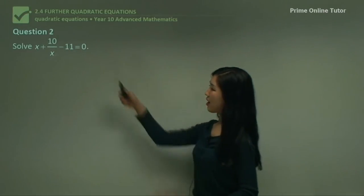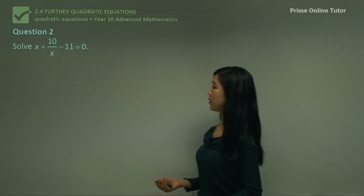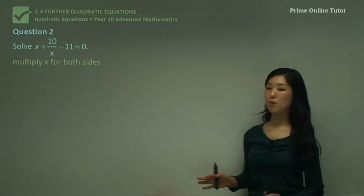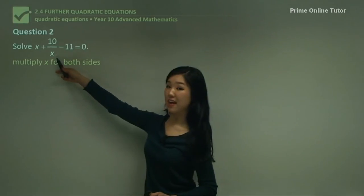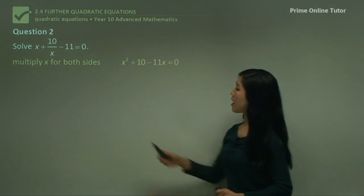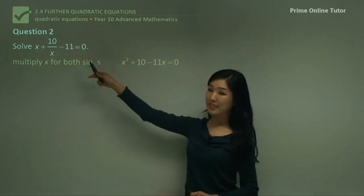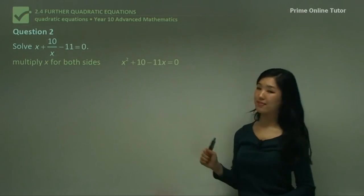Okay, question 2. Again, we've got some fractions. So what I'll do first is multiply x for both sides. Multiply x to everything because the denominator again is x. So it will become x² + 10 - 11x.